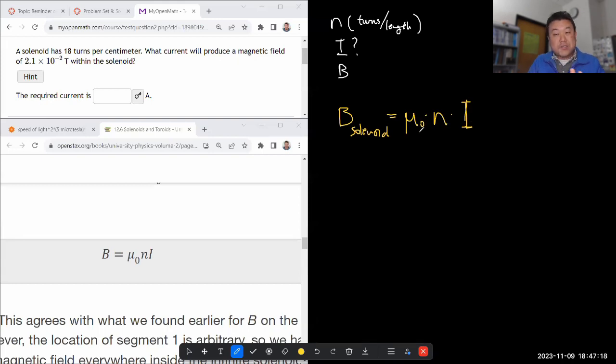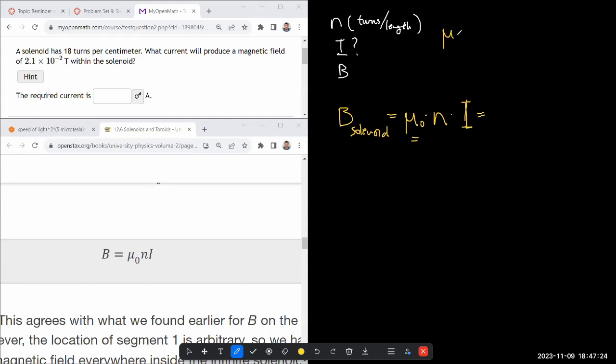Let me just write the version of it using the constants that I'm going to insist that we keep on using. Again I'm using this correspondence between the magnetic constant and the Coulomb's constant and the speed of light. So using that, this formula can be written as 4πke over c squared times n times I. So we have the formula.